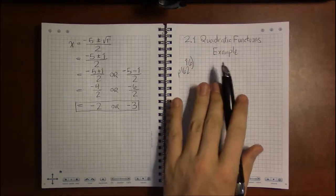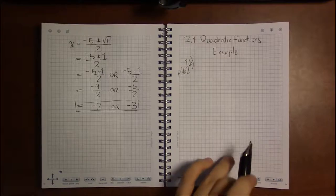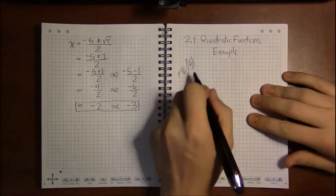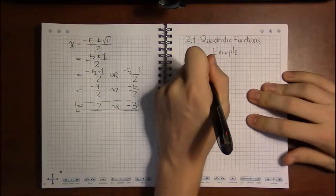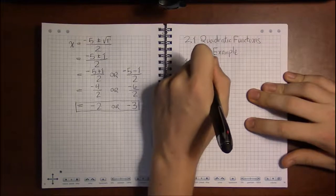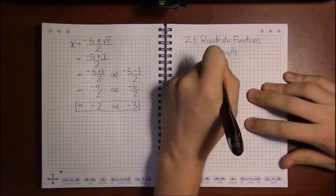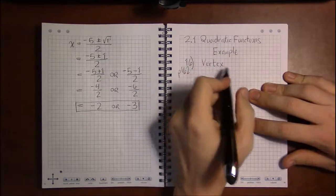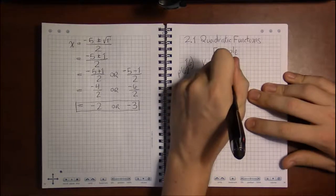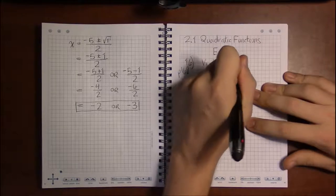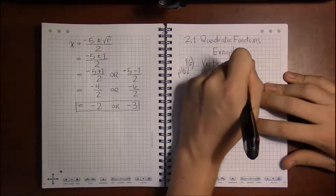Alright, we need to do a lot of examples from section 2.1. So let's look at one block of examples talking about finding the vertex form of a parabola given the vertex of that parabola and another point.